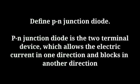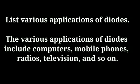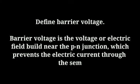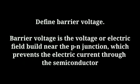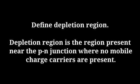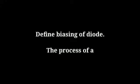Define PN junction diode: a PN junction diode is a two-terminal device which allows electric current in one direction and blocks it in another direction. The various applications of diodes include computers, mobile phones, radios, and televisions. Define barrier voltage: barrier voltage is the voltage or electric field built near the PN junction which prevents electric current through the semiconductor. Define depletion region: the depletion region is the region present near the PN junction where no mobile charge carriers are present.